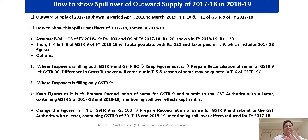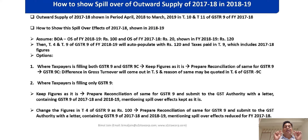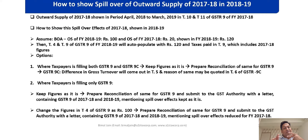First option: you should keep the figure as-is — 120 as auto-populated. Do not make any correction. The corresponding taxes are being shown in Table 9 of GSTR 9 of 18-19. But you must prepare a reconciliation statement. This reconciliation statement must show that the 120 which is auto-populated includes FY 18-19 turnover of 100 and FY 17-18 turnover sown in 18-19 of 20 rupees. This is evidenced when you look at GSTR 9 of 17-18, specifically Table 10.